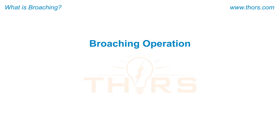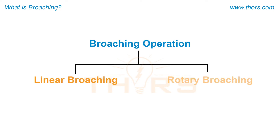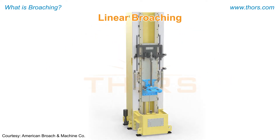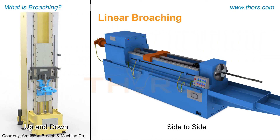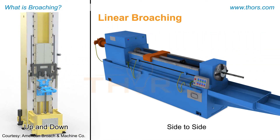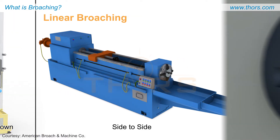Broaching operations can also be classified as linear broaching or rotary broaching, based on the movement of the broach in relation to the workpiece. When the broach travels linearly — up and down or side to side in relation to the workpiece — it is called linear broaching.